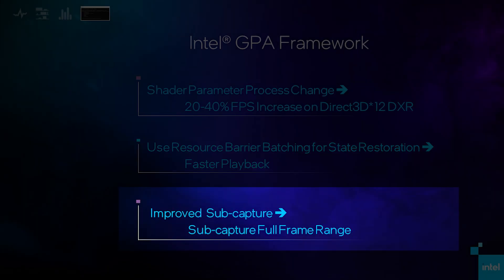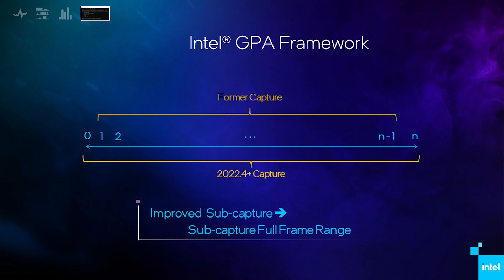And finally for GPA Framework, we improved the GPA Subcapture Recorder tool. For quite some time, the GPA Subcapture Recorder tool could not include the first frame or the last frame of a stream while guaranteeing that the stream was valid. This limitation has been fixed, allowing the entire stream to be subcaptured with the GPA Subcapture Recorder. This can be extremely useful because compression can be enabled during subcapture, producing a smaller stream file that still has all the same frames and data as the original larger stream file.